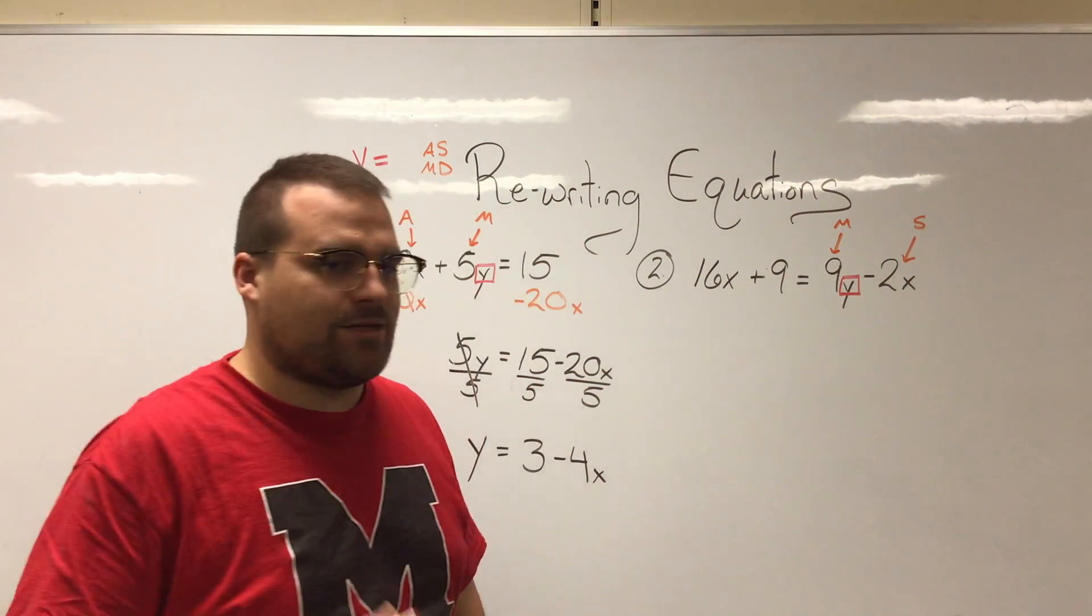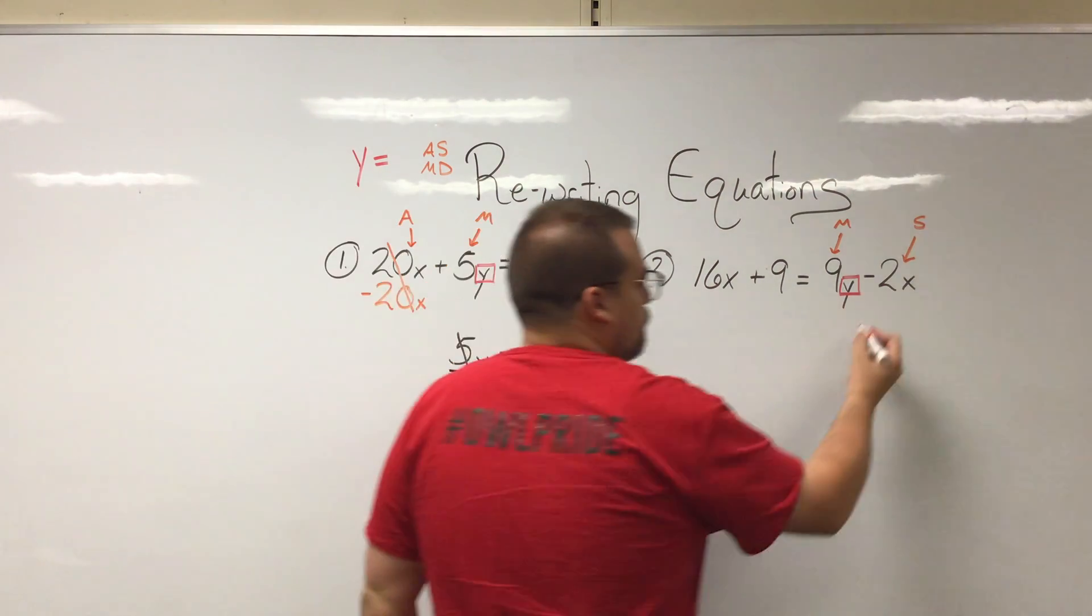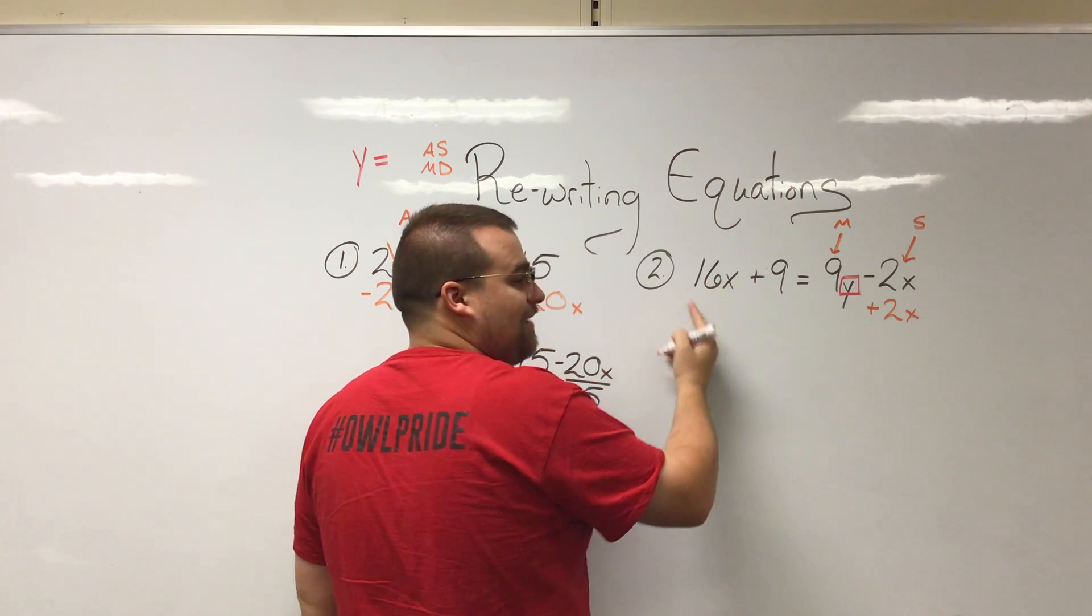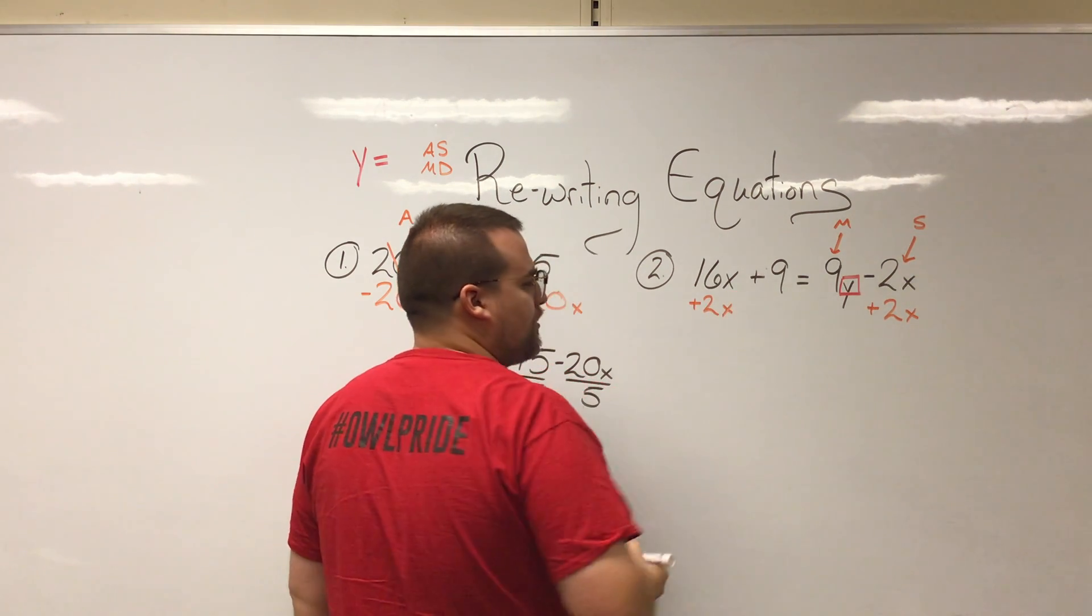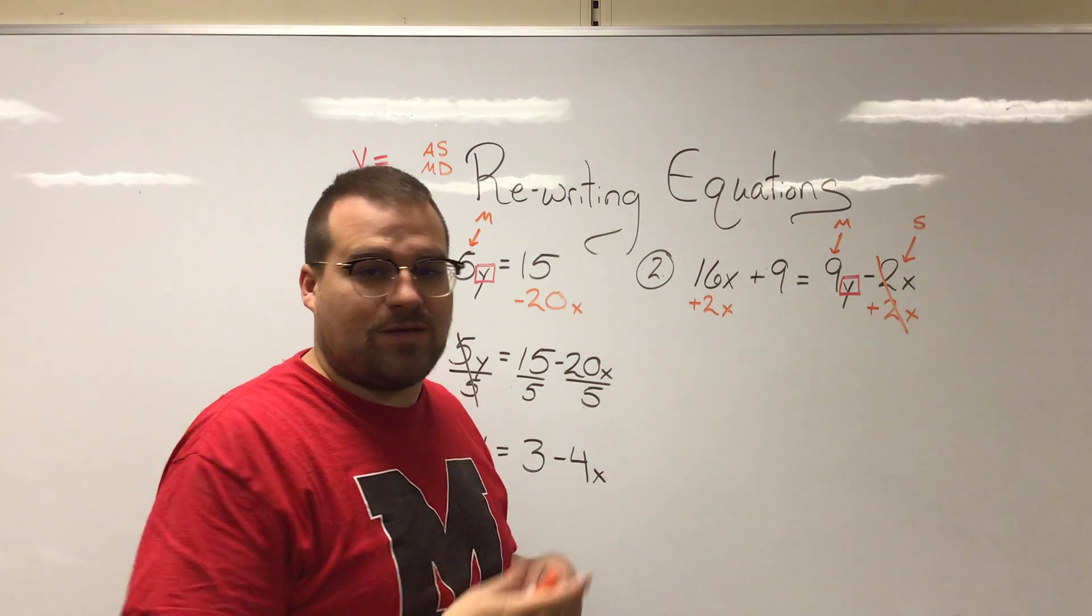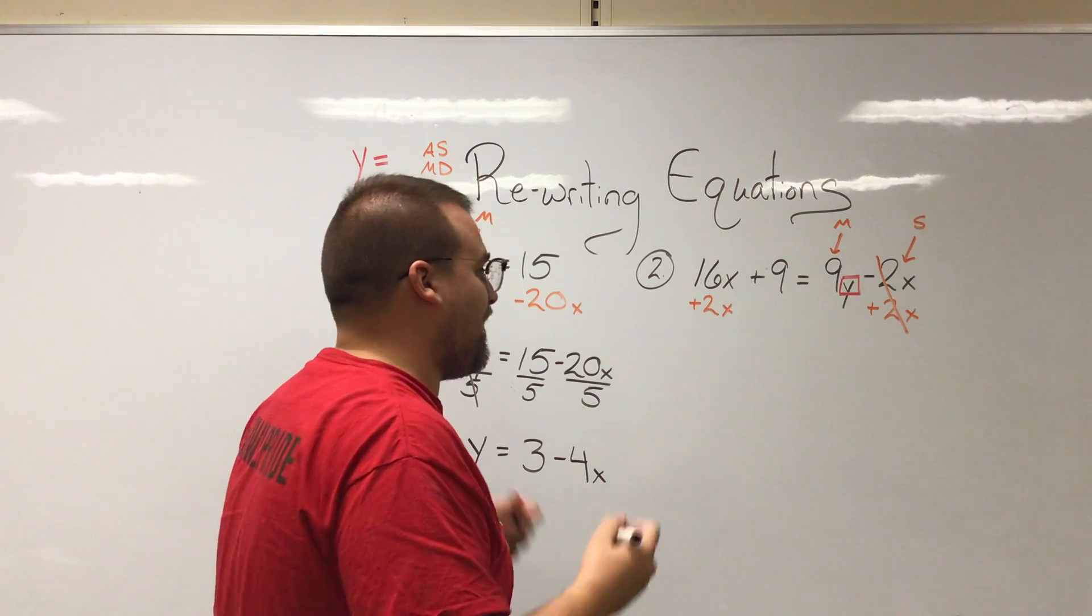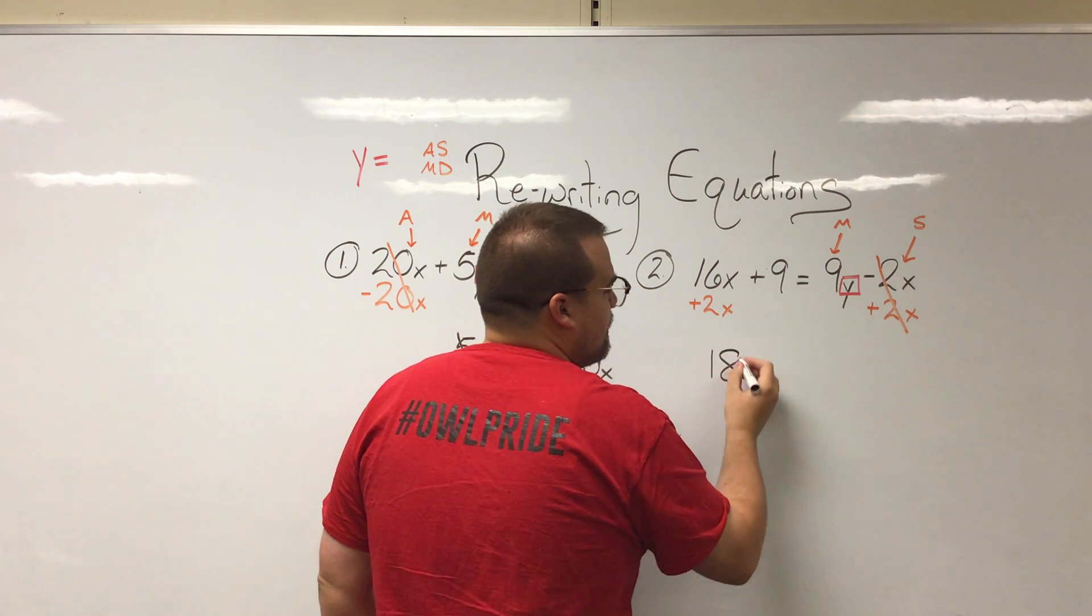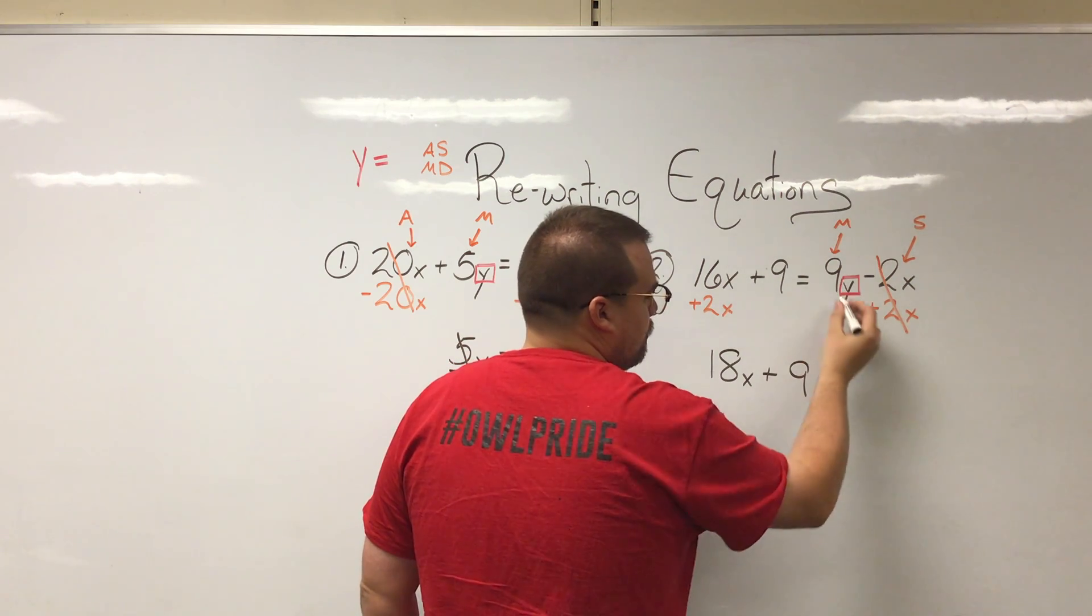So what I'm going to do is I'm going to go ahead and deal with that addition or subtraction first. So plus 2x, and then I already have an x term over here, right? So I can go ahead and say, well, plus 2x to that x term. Previously we haven't had that like term on the other side already, so we haven't been able to, but here we can. So 16x plus 2x gives us 18x. And then we still have plus 9 there, and it equals 9y.